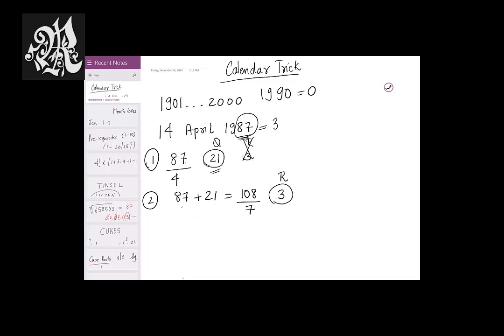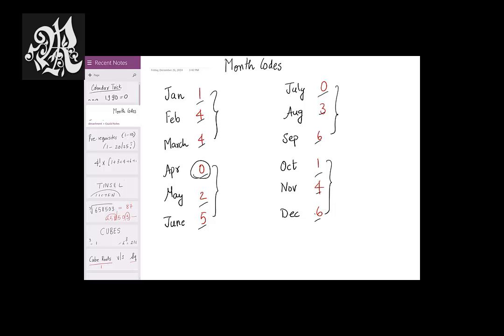The next step, which is very important, is the month quotient. Now look at this. 12 months and each of them have the quotient. January is 1, February is 4, March is 4, April is 0, May is 2, June is 5, July is 0, August 3, September 6, October 1, November 4 and December 6.